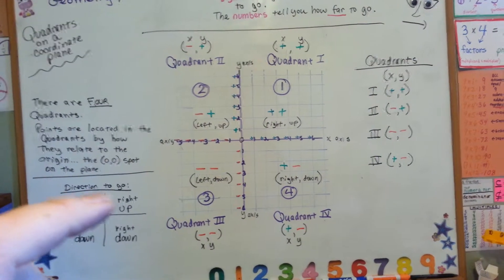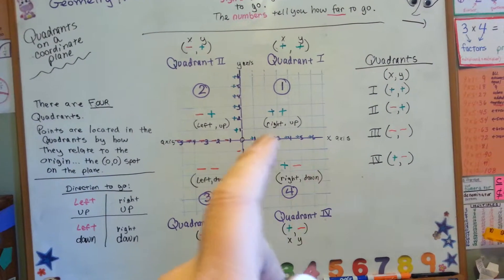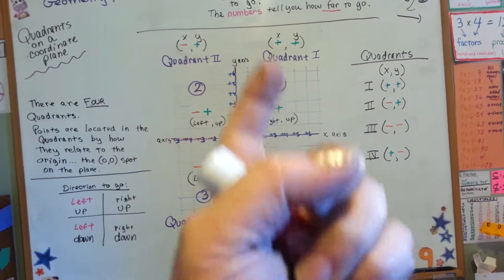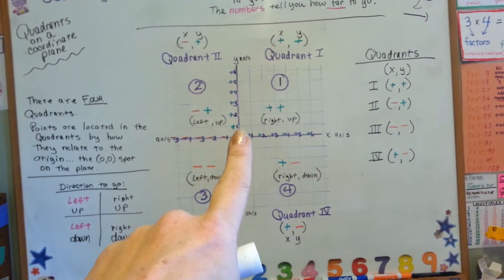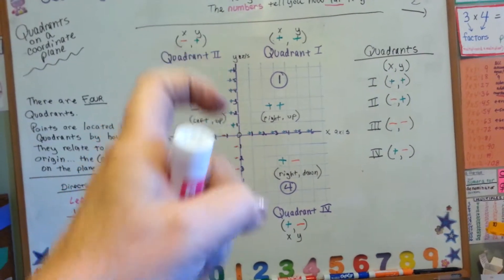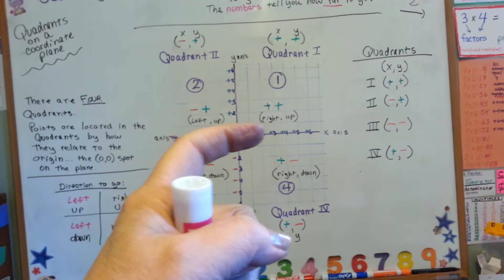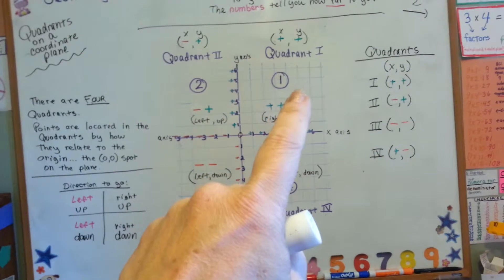So in quadrant 1, you would head to the right and up. You would head to the right and up, because number 1 is here and number 1 is here. So you go up 1, 2, 3, 4, 5, 6, and you go to the right 1, 2, 3, 4, 5, 6. That's what you do for quadrant 1.